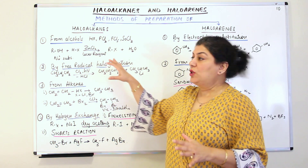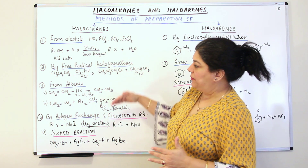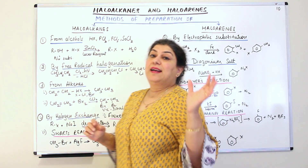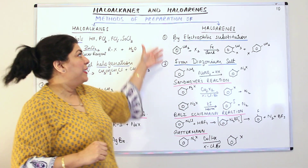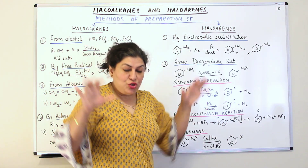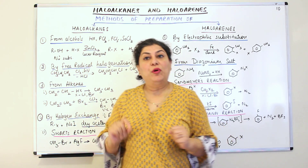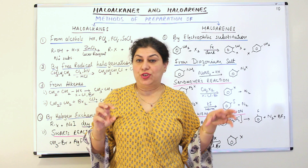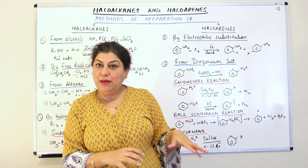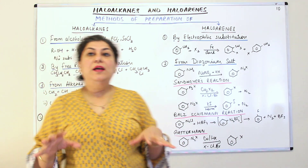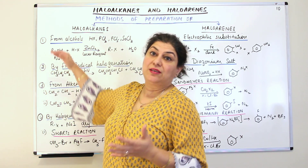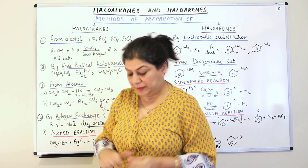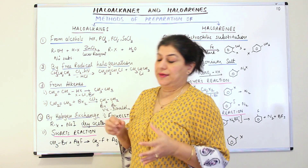By doing that, I have categorized them: there are 4 different methods by which you can prepare Haloalkanes and there are 2 main methods by which you can prepare Haloarenes. The other important thing in this topic is there are lots of named reactions. Whenever you have a named reaction, I have underlined it with pink, while the different methods are underlined with blue ink, just so you know the categories.